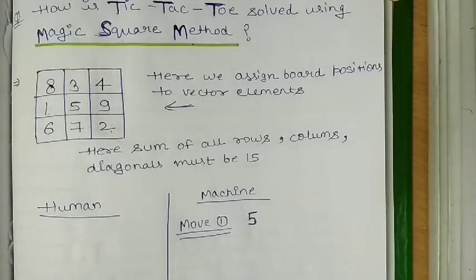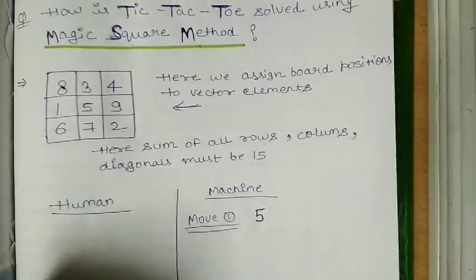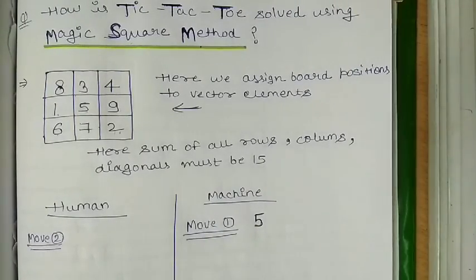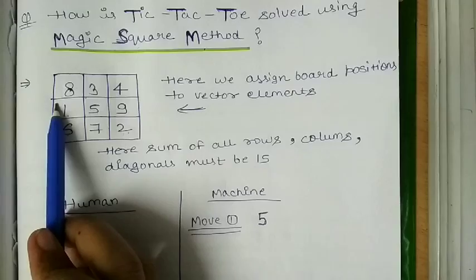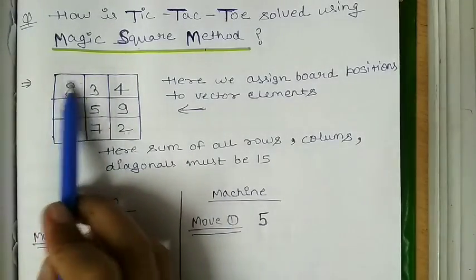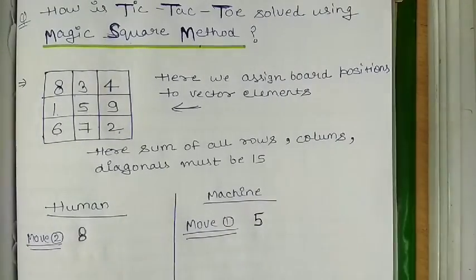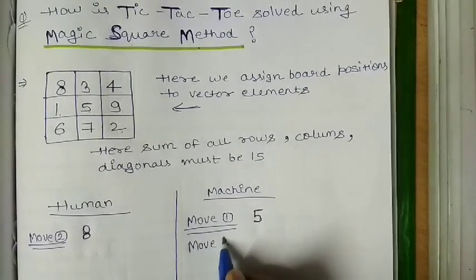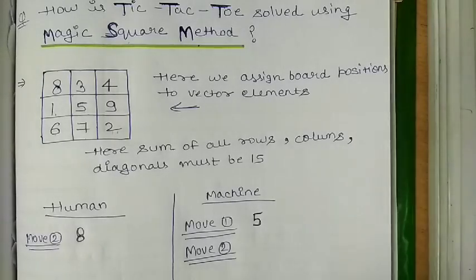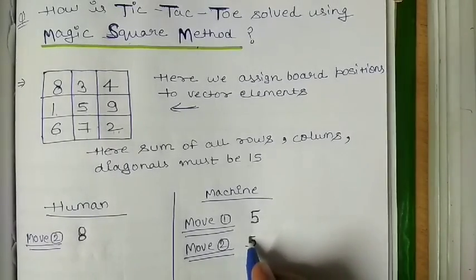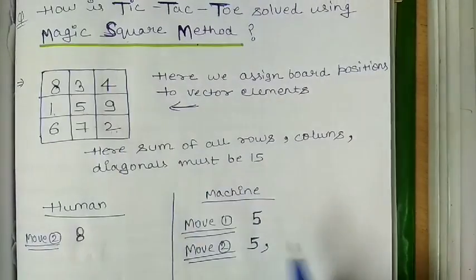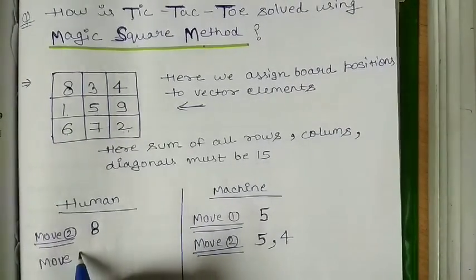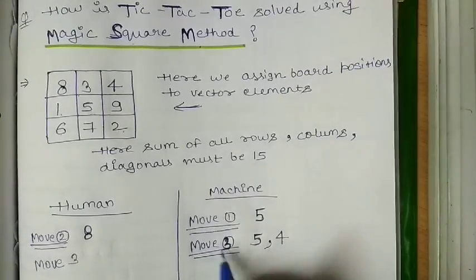Alternate moves must be taken by the opponent. The opponent of machine is human, so Move 2 must be taken by human. Suppose human takes this position of the magic square, and the element here is 8. So in Move 2, human selects element 8. Now the alternate Move 3 is again taken by machine. Since 5 is already taken, machine will take element 4.